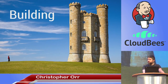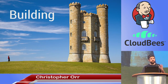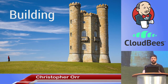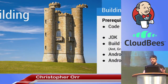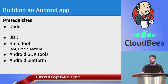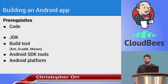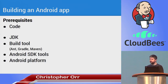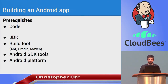What exactly are the steps we need to take to go from our Android code on one side to happy end users at the other end? Well, the first step with Jenkins is building. So we can build our app, know that it's running in a clean environment, and we can do some static code analysis. What do we actually need to build an Android app? The code, the Java development kit, your build tool, the Android SDK tools, and the Android platform.